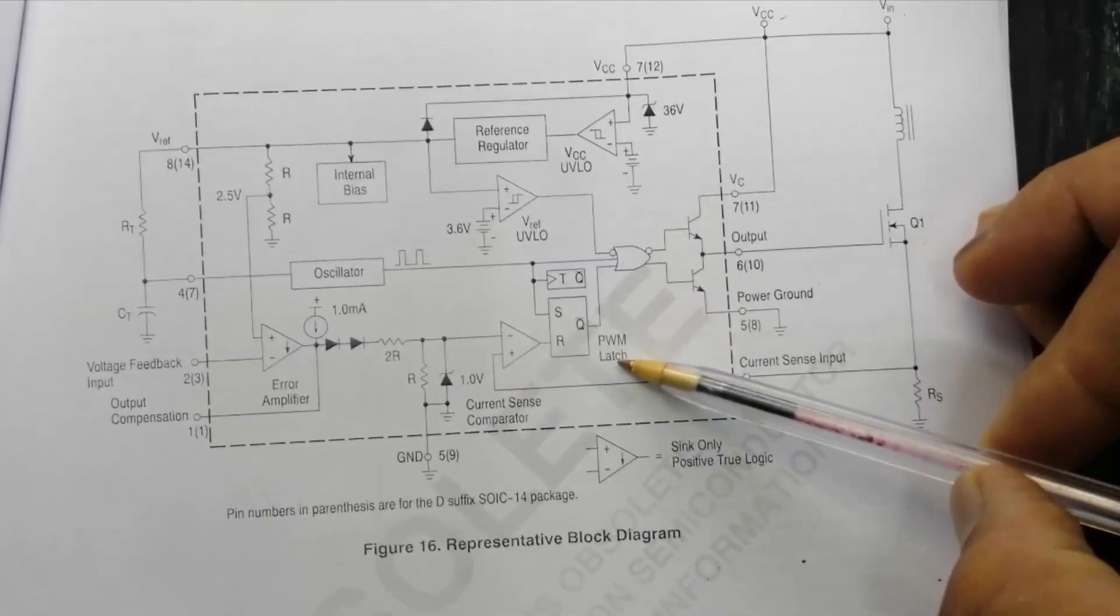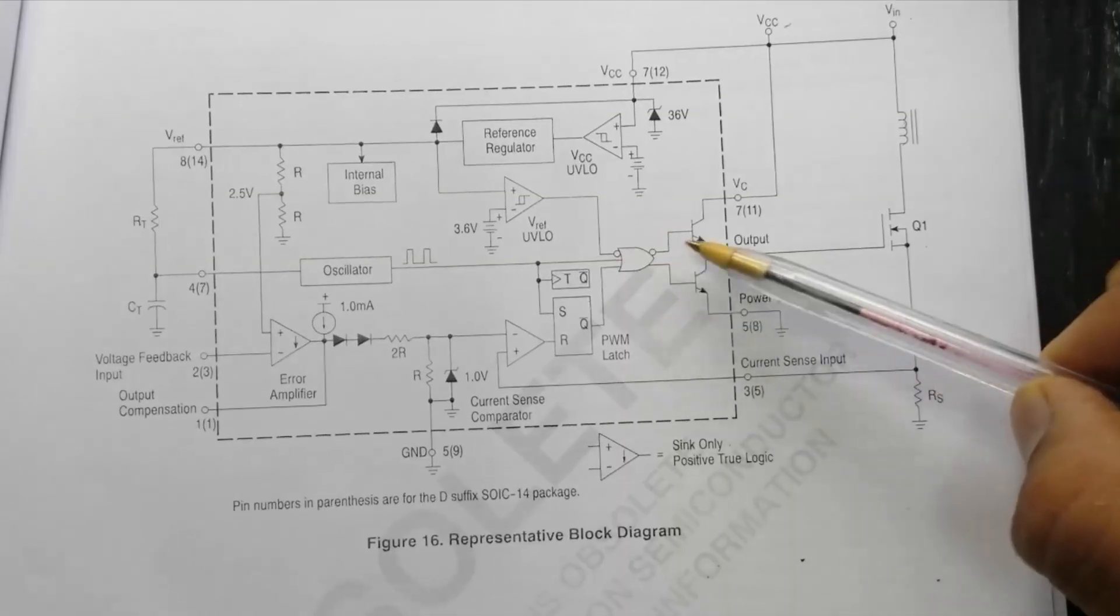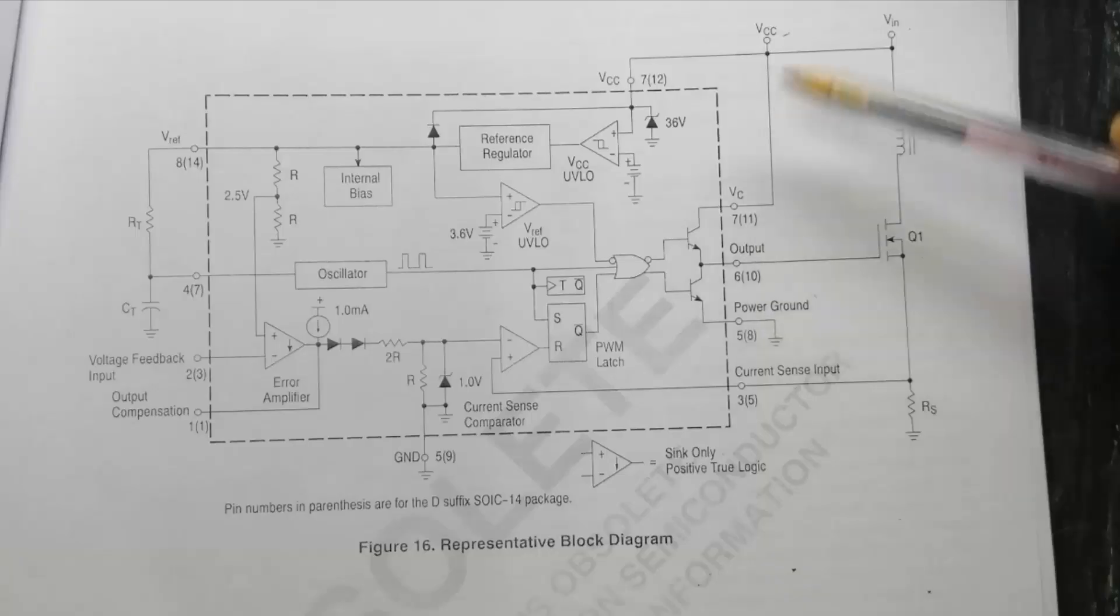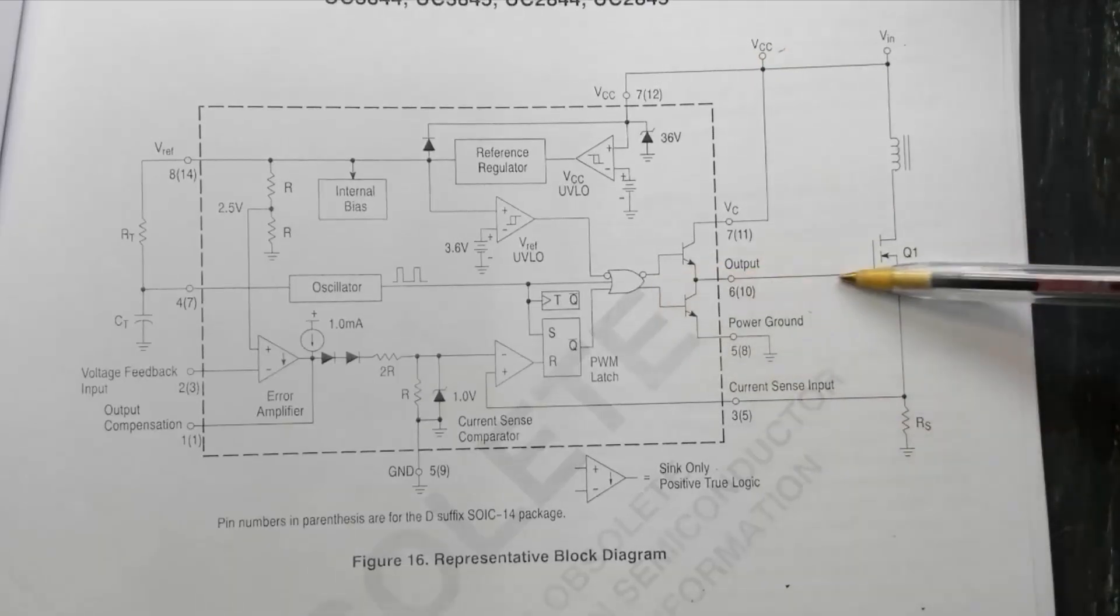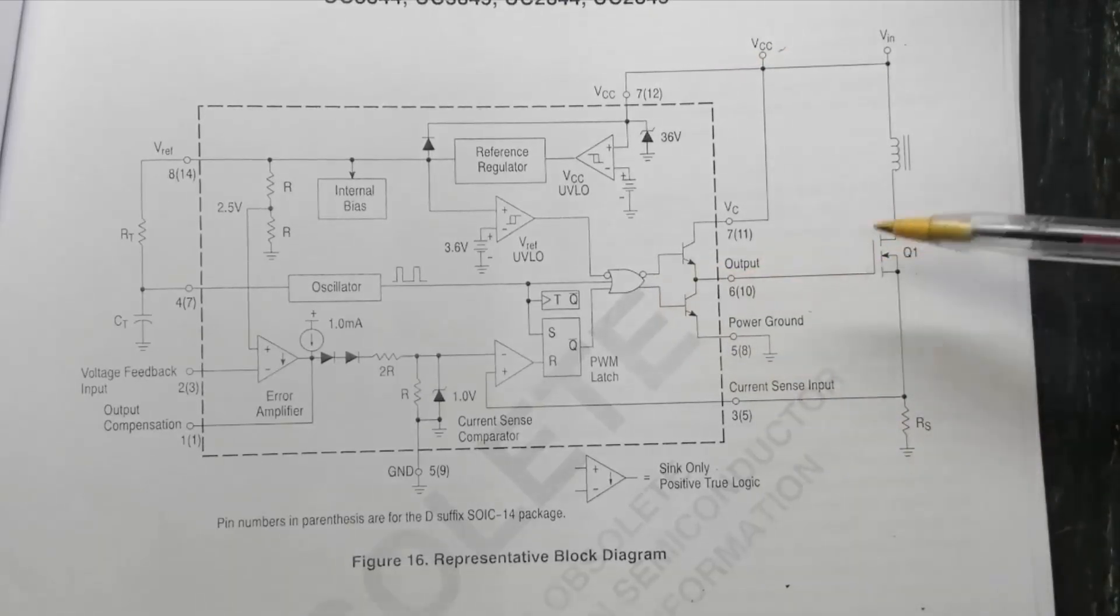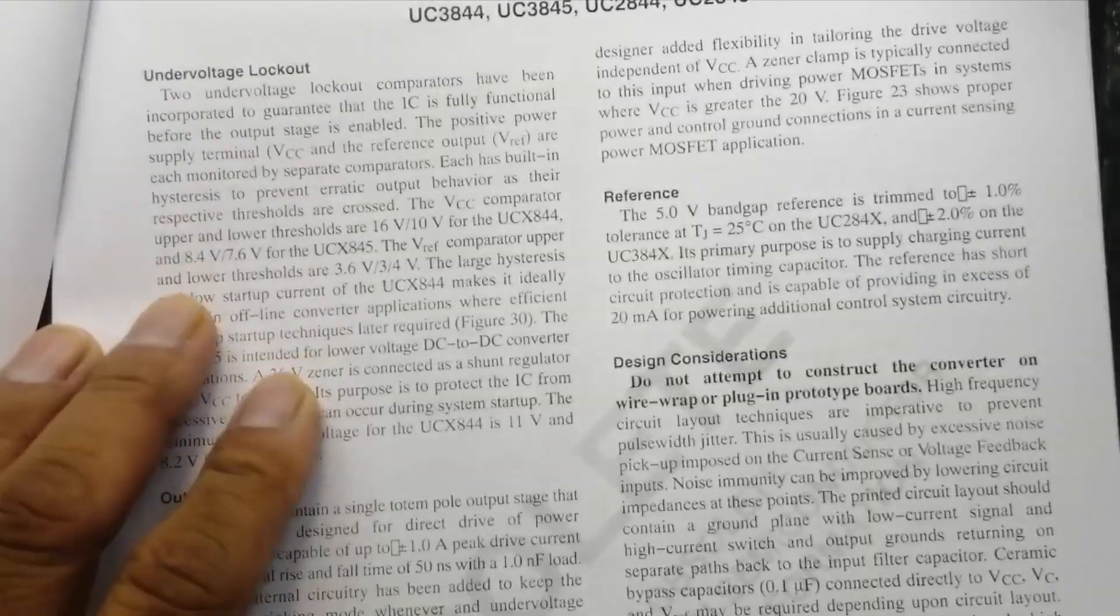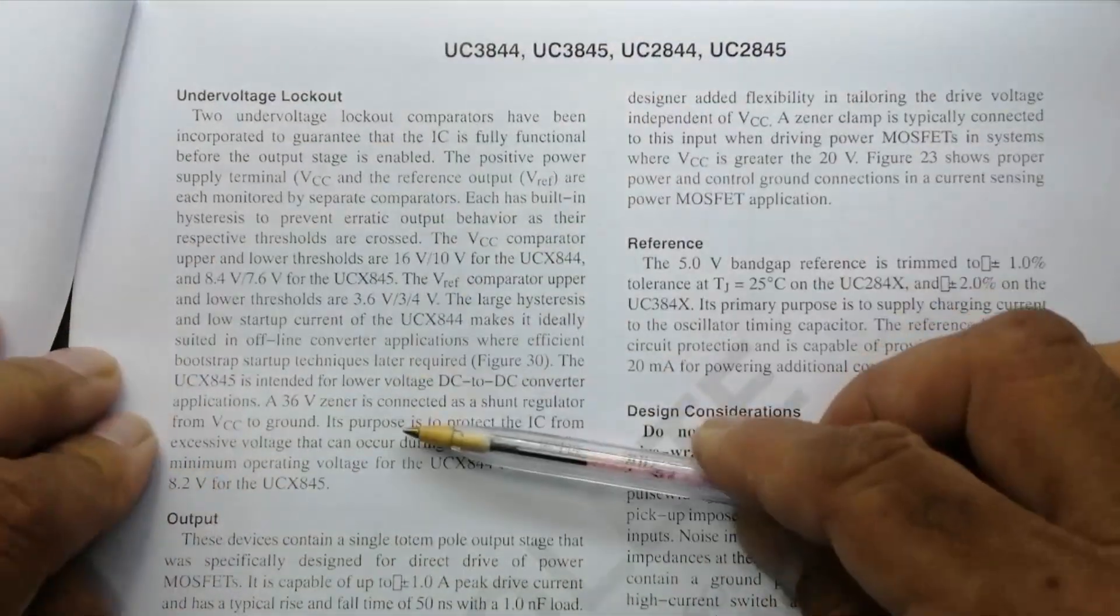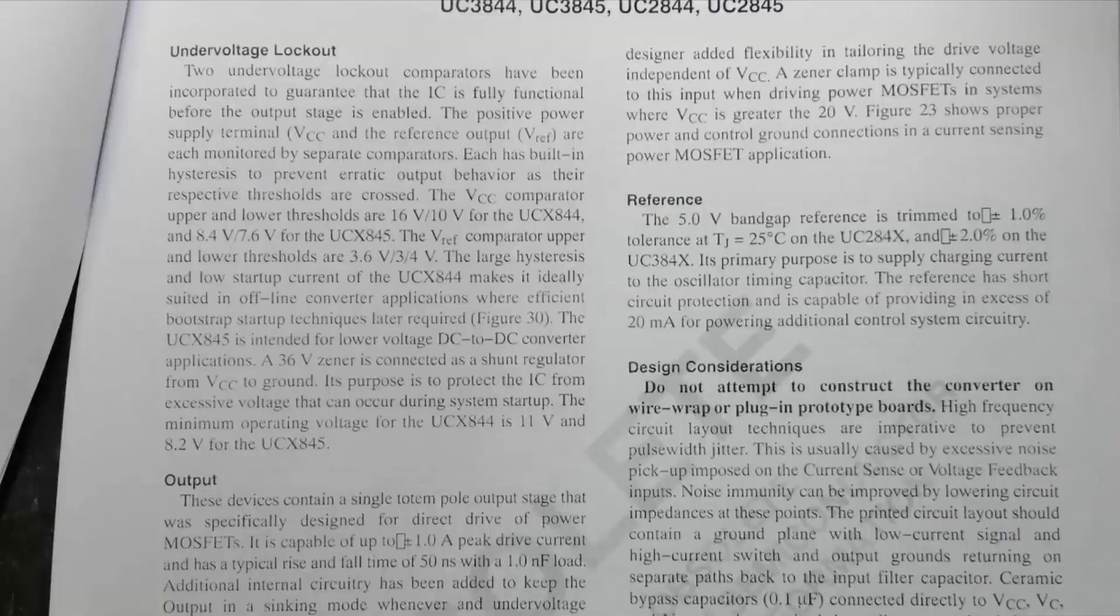Then we have oscillator, then we have error amplifier, all the items are calculated. After that, in the PWM latch, in the output section, it will drive the MOSFETs, it will ground and VC, and it will apply a gate drive pulse to this MOSFET and it will make switching. Here are different parameters mentioned in detail.